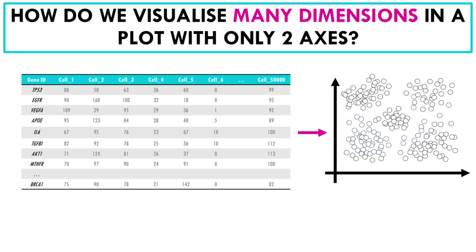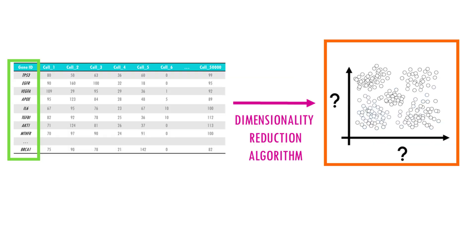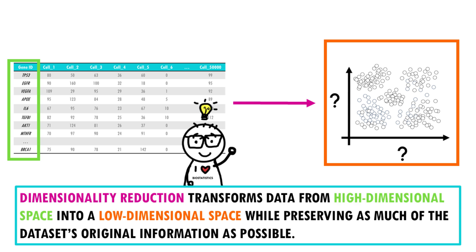To do that, we introduce the concept of dimensionality reduction, by which we convert a multi-dimensional dataset with many thousands of genes into two variables we can plot. Obviously when we reduce the number of dimensions, we're going to lose information, but the idea is to preserve as much of the dataset structure and characteristics as possible.